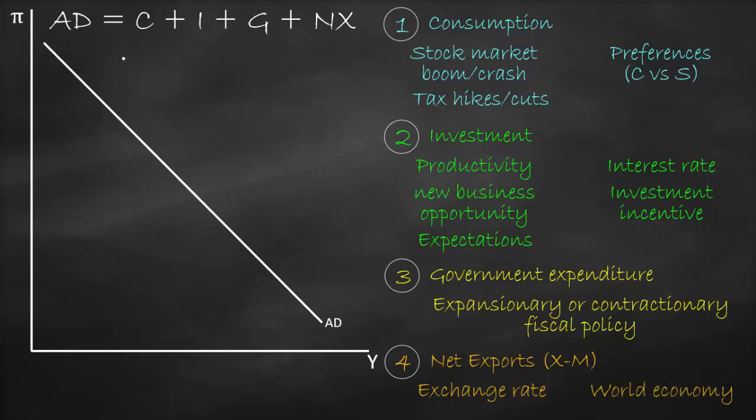The world economy also affects net exports. For example, if China — a neighboring economy of Australia — starts to flourish, they will need to consume and import more. They will import from Australia, increasing Australian exports and shifting aggregate demand to the right.